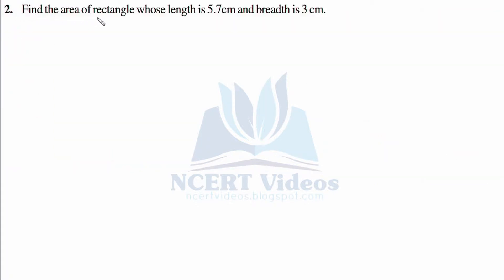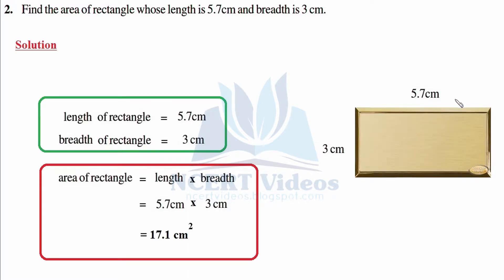Second question: find the area of a rectangle whose length is 5.7 cm and breadth is 3 cm. This is your box — you can consider it as a golden box. The length of the rectangle is 5.7 cm. Although it is a box, since it is represented in two dimensions only, there is no height associated with it, therefore it is a rectangle. Whenever you view a box from top view, it appears to be a rectangle.